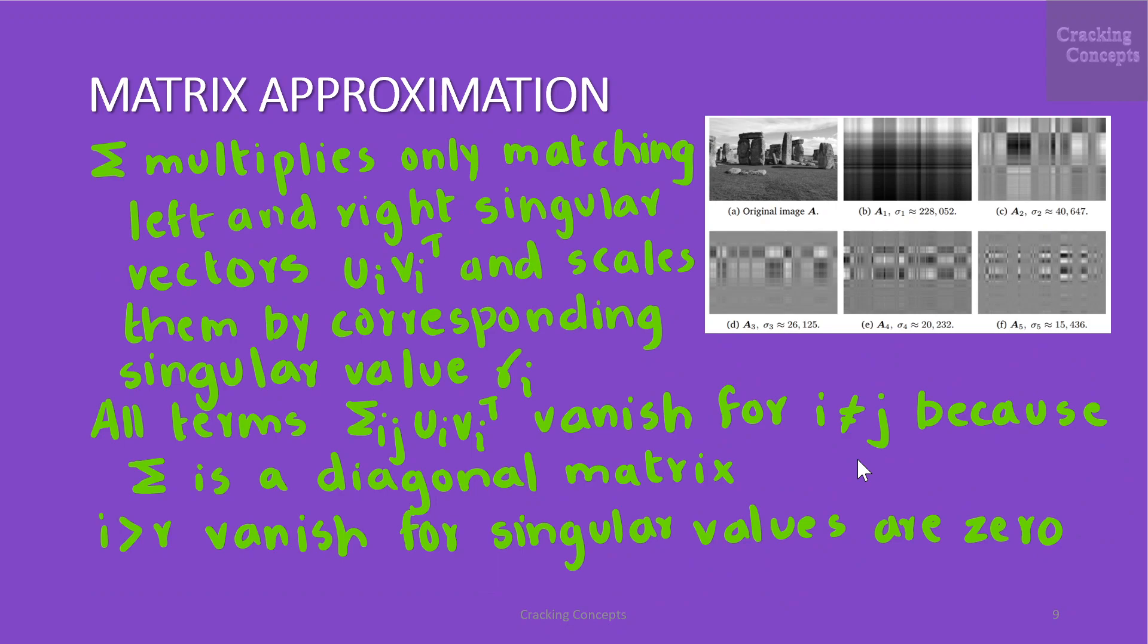The diagonal structure of the singular value matrix σ multiplies only matching left and right singular vectors u_i v_i^T and scales them by the corresponding singular value σ_i. All the terms σ_ij u_i v_j^T vanish for i not equal to j because σ is a diagonal matrix. Any terms where i greater than R vanish because corresponding singular values are 0.